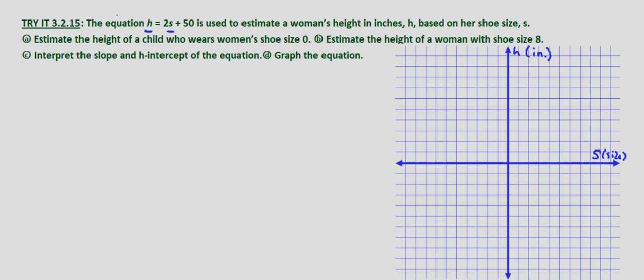With part a we're asked to estimate the height of a child who wears women's shoe size 0. So that means s equals 0. To find the estimated height we simply plug in s equals 0 to our equation. So h equals 2 times 0 plus 50 which equals 0 plus 50 which equals 50 inches. So according to our equation, an estimate of the height for a woman who wears a shoe size of 0 would be 50 inches.